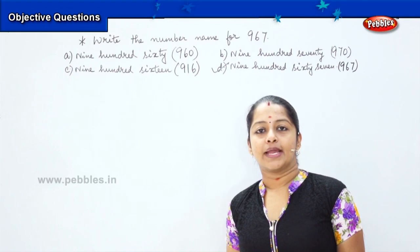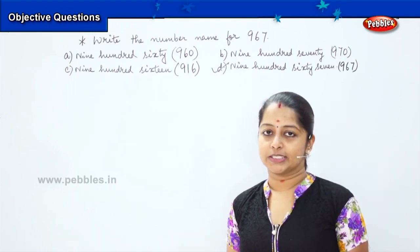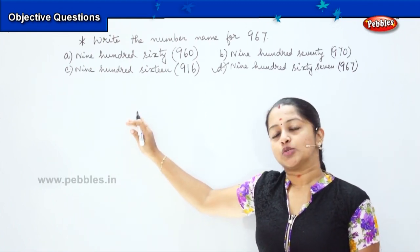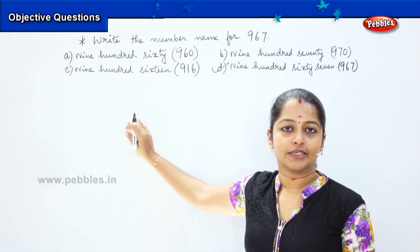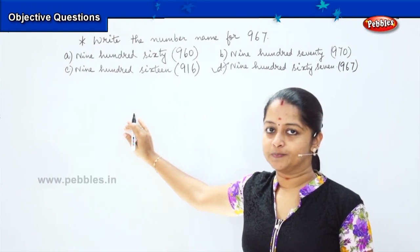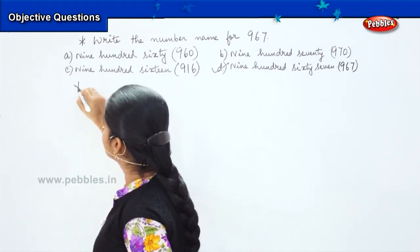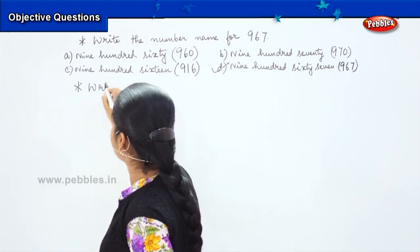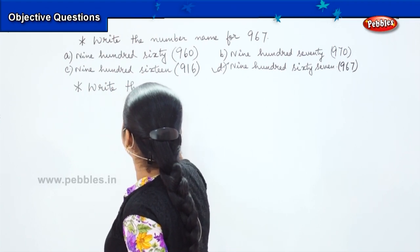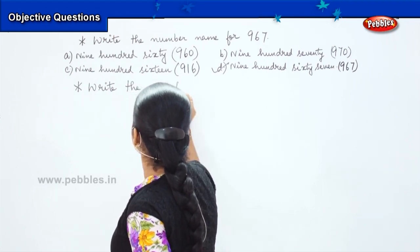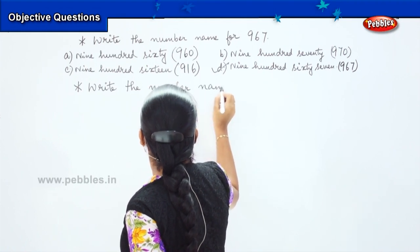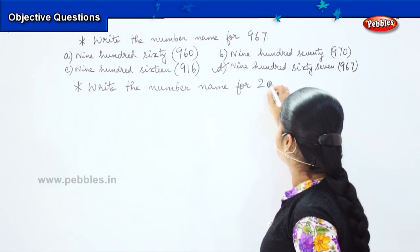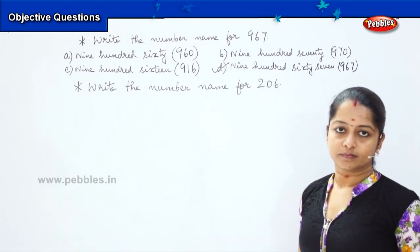So my correct answer will be option D, which is 967. It's getting more interesting, right? Shall we move on with some more questions? I have a couple more questions in the same pattern, which will make us thorough with the number names. Clear, children? Shall we move to the next one? Here we are. The next question says: write the number name for 206.